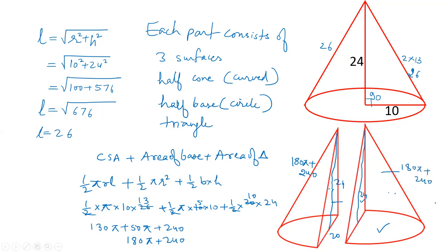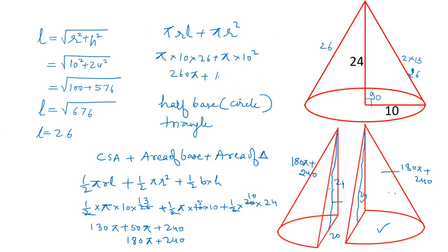Now if we compare with the original surface area of the original cone, that will be equal to pi r l plus pi r square. Pi into 10 into 26 plus pi into 10 square. So this will be 260 pi plus 100 pi, that is 360 pi.